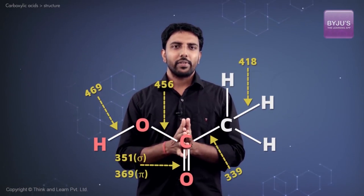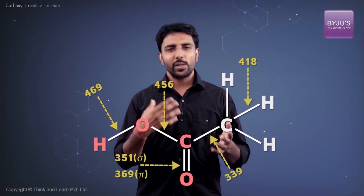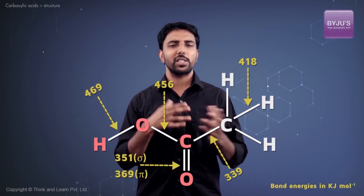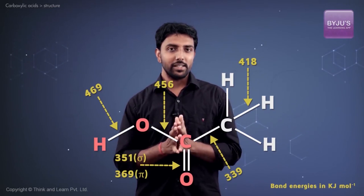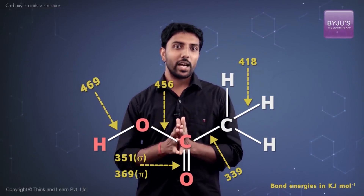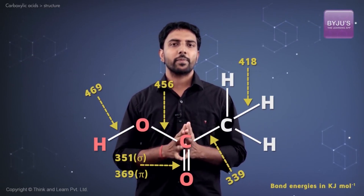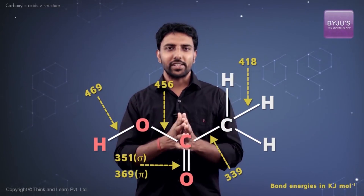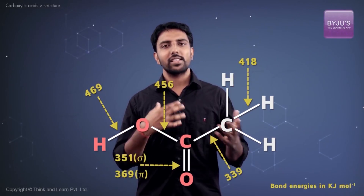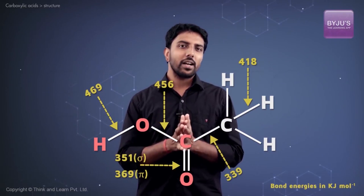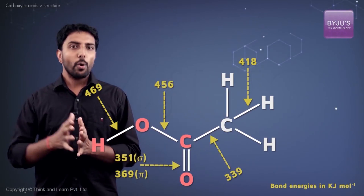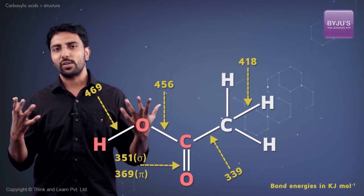Take a look at this compound. This is acetic acid. We have shown the bond strengths of all the different possible bonds involved here. And surprisingly, the strongest bond happens to be the OH bond and the weakest happens to be the carbon-carbon bond. Yet there are very few reactions of acetic acid which involve the cleaving or breaking of this carbon-carbon bond, and most of the characteristic reactions of this compound do involve the breaking of the OH bond, which happens to be the strongest of them all.